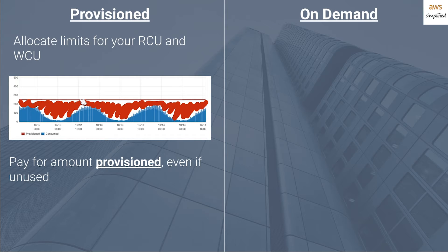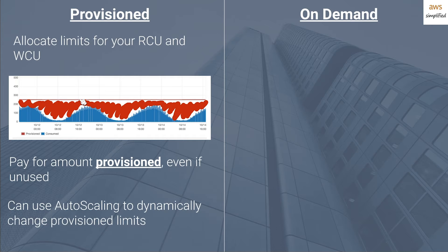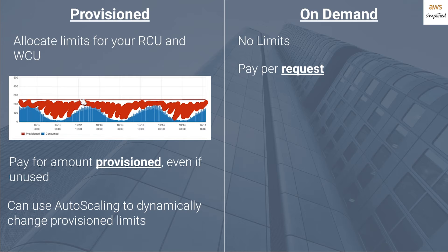When you're using provisioned you don't always have to arbitrarily set a fixed limit. You can use auto scaling to dynamically change provisioned limits based on your usage patterns, and this helps to keep your costs down. With on-demand it's quite a bit simpler — you don't need to worry about provisioned limits and usage because there are no limits. Much of the complexity is abstracted away so you can focus on solving your business problem. Also different from provisioned, instead of paying by the hour you pay per request, meaning you're only paying for what you're using.